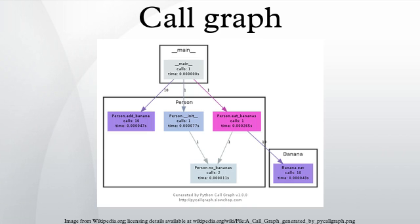Conversely, computing precise aliasing requires a call graph. Many static analysis systems solve the apparent infinite regress by computing both simultaneously.